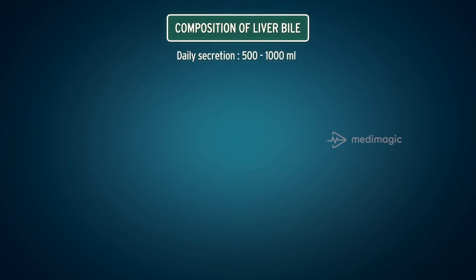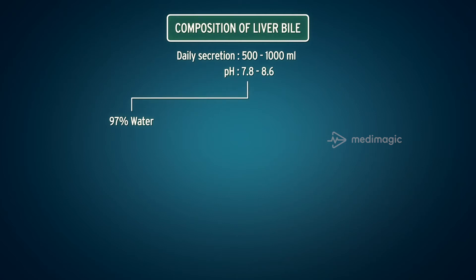Composition of liver bile: daily secretion is 500 to 1000 ml. It is a transparent, alkaline fluid, light golden yellow in color, with a pH of 7.8 to 8.6, and is isosmotic with plasma. Water content is 97%, while bile salts are 0.7%, at 120 to 180 milligrams per deciliter — these are sodium and potassium salts of bile acids.